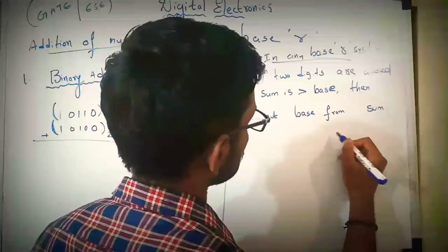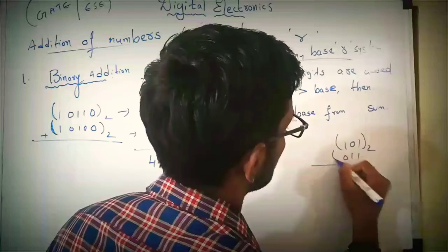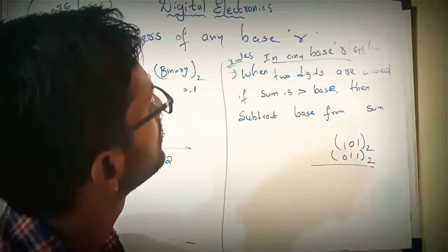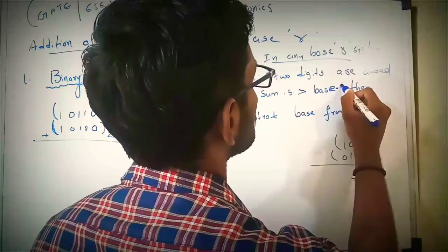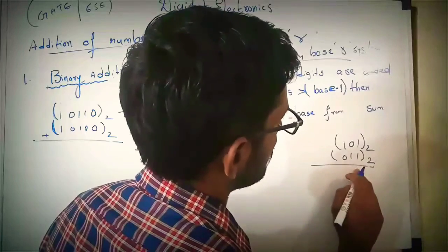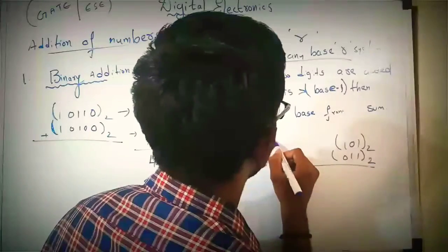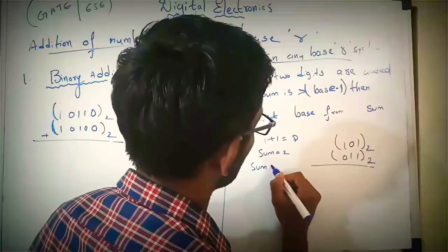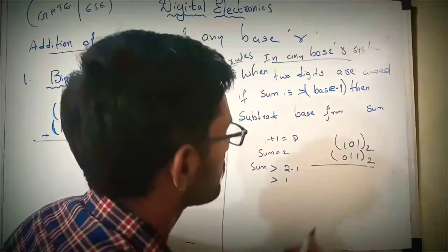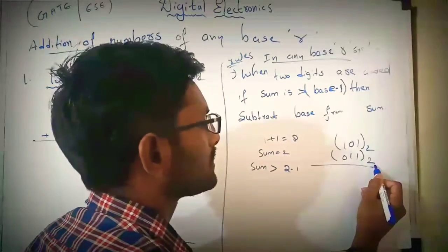Let us take any two numbers. Here we are doing binary addition. This is 1 0 1 0 1 1, base 2. See: 1 plus 1 is 2. Here sum is greater than base minus 1, which is 1. When sum is greater than 1, then subtract 2 from the sum. Here 1 plus 1 is 2, and 2 minus 2 is 0.